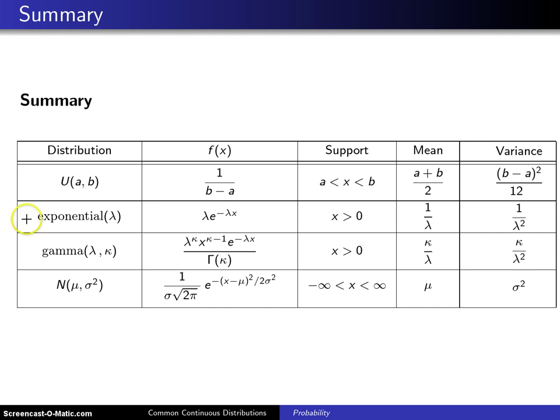The first two distributions — the uniform and the exponential — have closed form cumulative distribution functions, whereas the second two — the gamma and the normal — do not have closed form cumulative distribution functions.